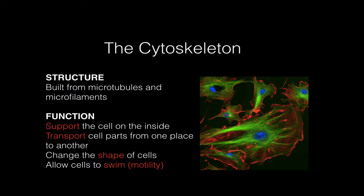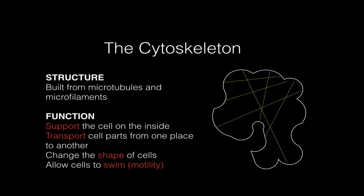The function of the cytoskeleton is to support the cell from the inside — that's why it's called a cytoskeleton — and to transport cell parts from one place to another, kind of like a cable and pulley system. This allows cells to both change their shape and allows some cells to swim, and cells that can swim are said to be motile.